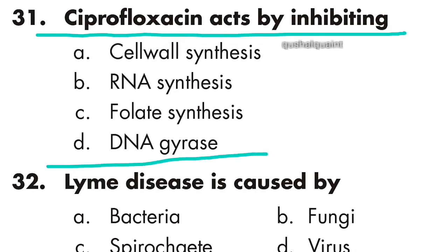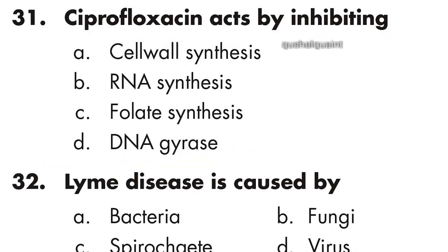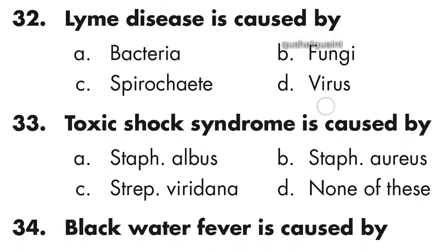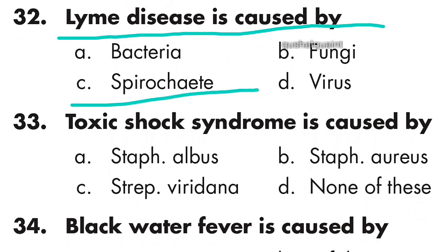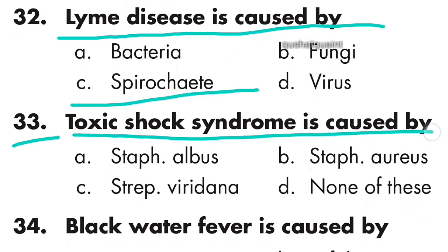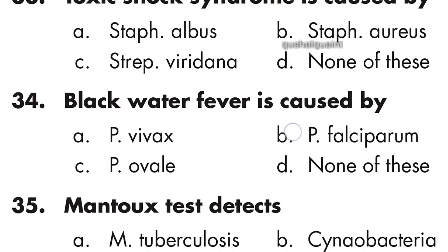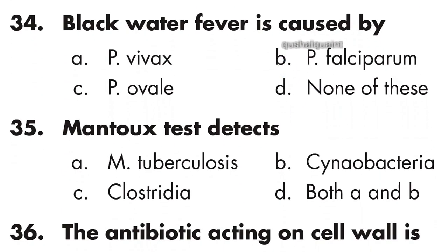Question 31: Ciprofloxacin acts by inhibiting DNA gyrase. Option D is right. Question 32: Lyme disease is caused by spirochetes. Option C is right. Question 33: Toxic shock syndrome is caused by Staphylococcus aureus. Option B is right.